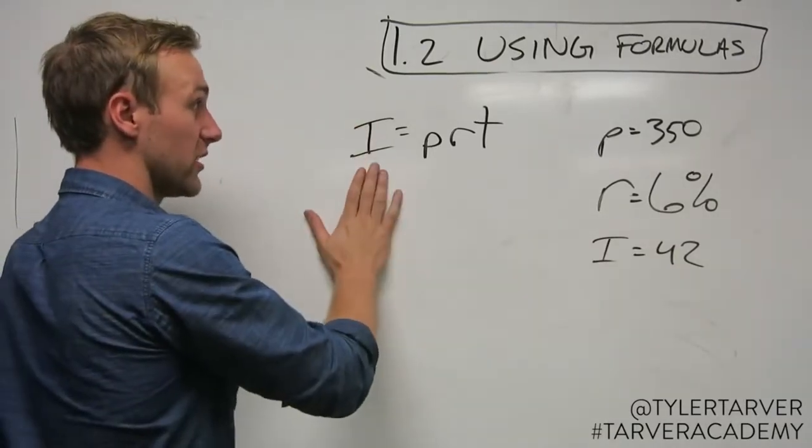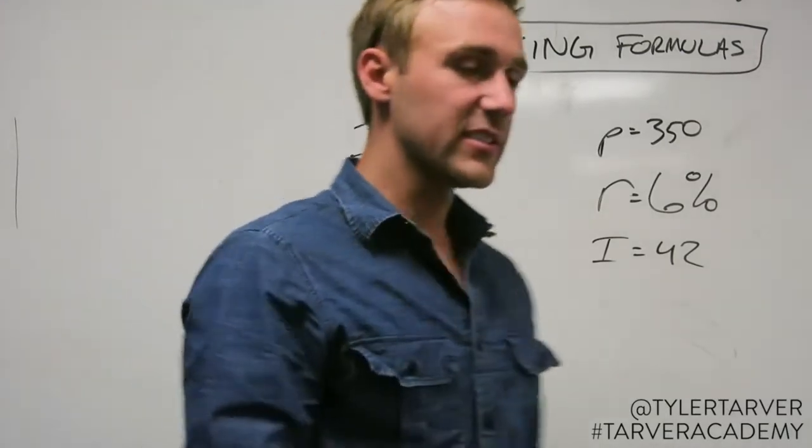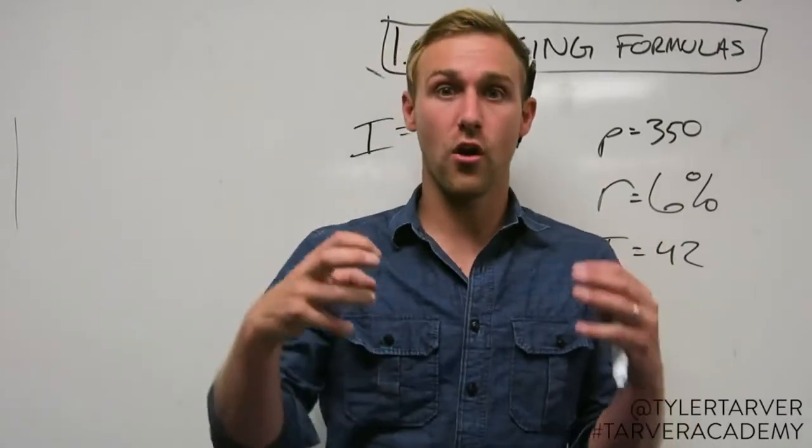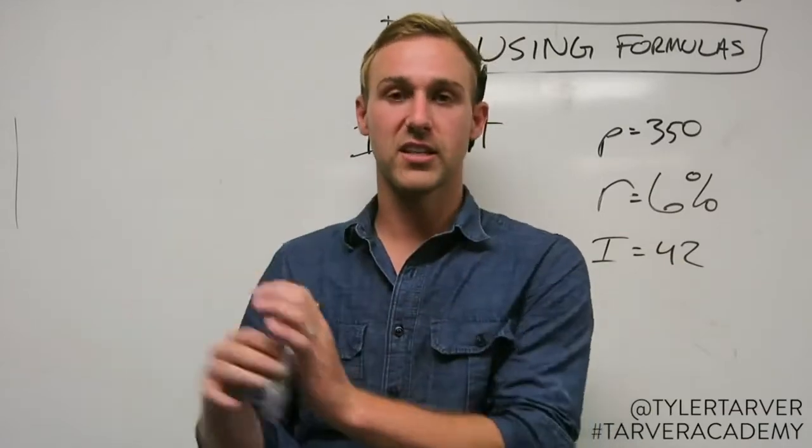I is your interest, P is your principal, R is your rate, T is your time. This is something you can do to find out how much interest you're going to accrue or earn if you have a certain amount of money in the bank. You make a certain percentage off that money over a certain amount of time.